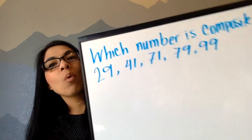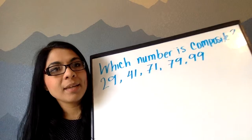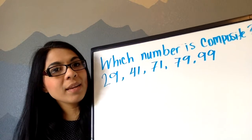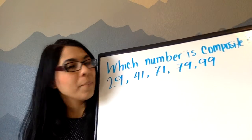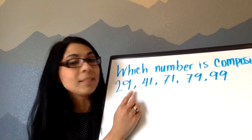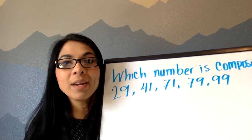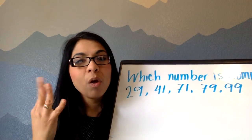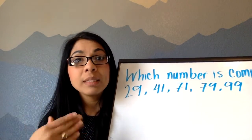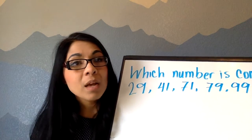So today we are going to identify which one is prime and which one is composite. Let's see which number is composite. Let's start with 29. It ends on a 9, so I know that it's not divisible by 2, 4, 6, 8, or even 10.